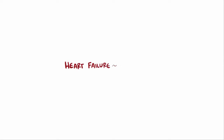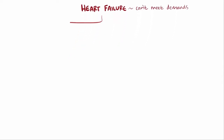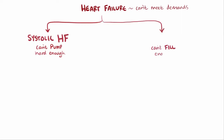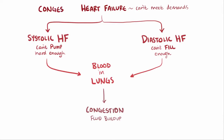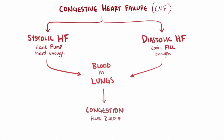Heart failure describes a point at which the heart can't supply enough blood to meet the body's demands, and this can happen in two ways: either the heart's ventricles can't pump hard enough during systole, called systolic heart failure, or not enough blood fills into the ventricles during diastole, called diastolic heart failure. In both cases, blood backs up into the lungs, causing congestion or fluid buildup, which is why it's also often known as congestive heart failure, or just CHF.